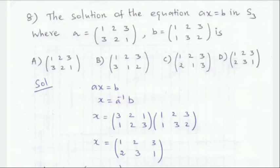The solution of the equation Ax = B in S3. S3 is the symmetry group. In general, S_N has N-factorial elements; S3 has 3! = 6 elements. For the equation Ax = B, the solution is x = A⁻¹ × B.